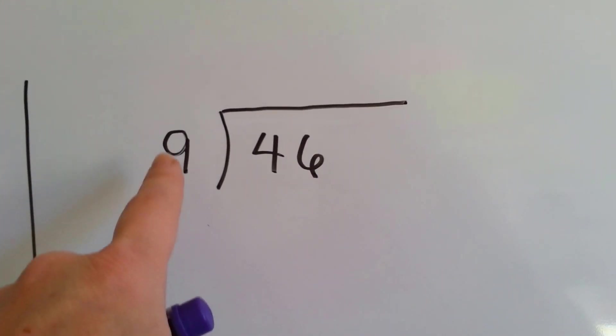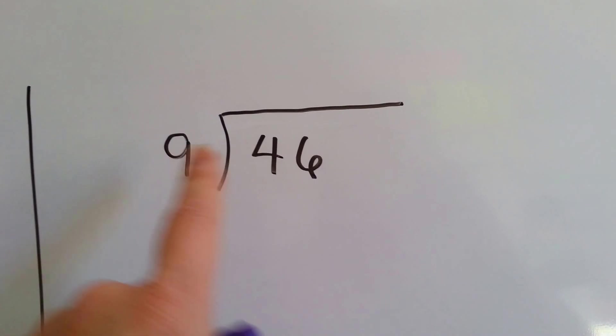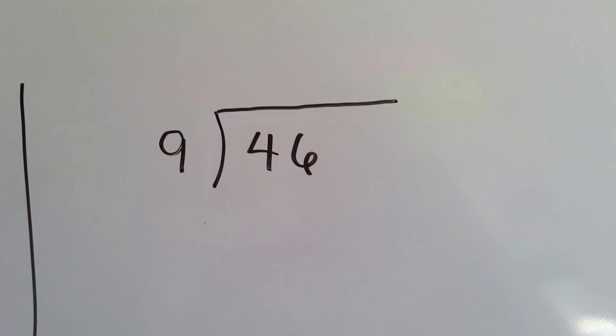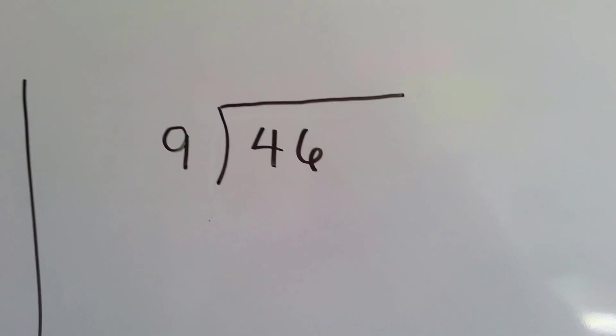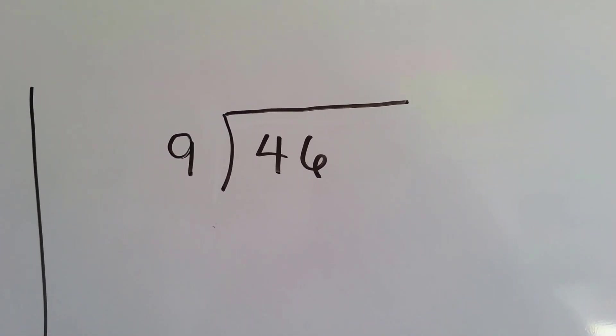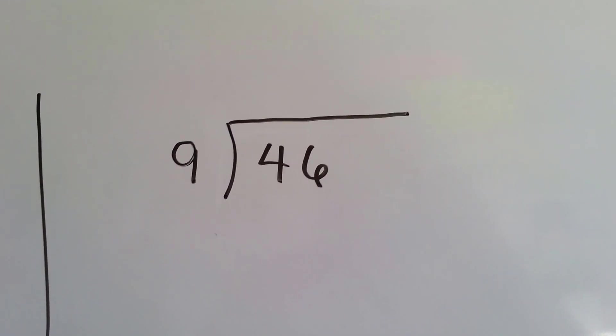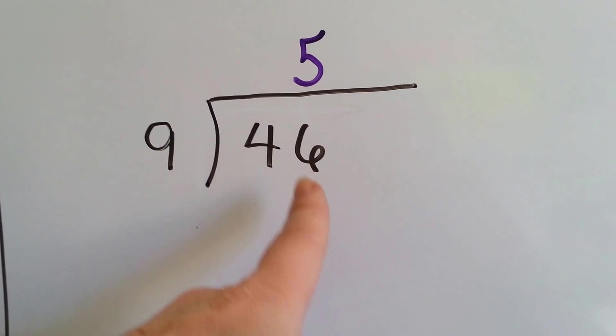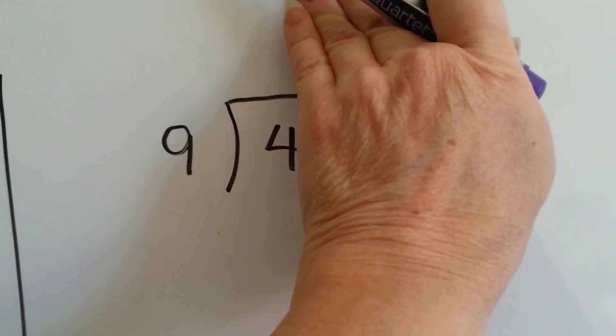So let's do it using the long division method. We've got 46 divided by 9. How many 9's can fit in that 46? What's 9 times 4? That's 36. What's 9 times 5? 9 times 5 is 45.